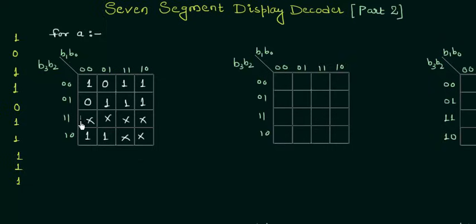Let's move to grouping. The first group that I can see is this one, in which we have eight ones. It is the group of 8, the first implicant. Then the second group is this one, also having eight ones.